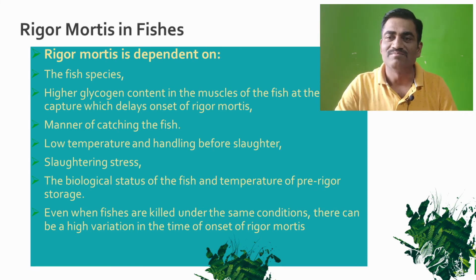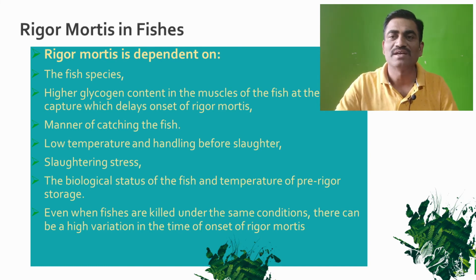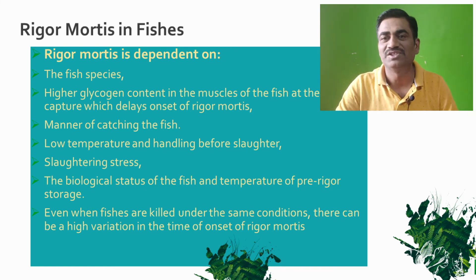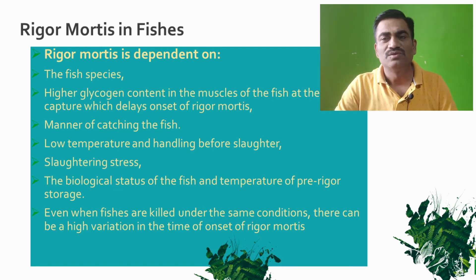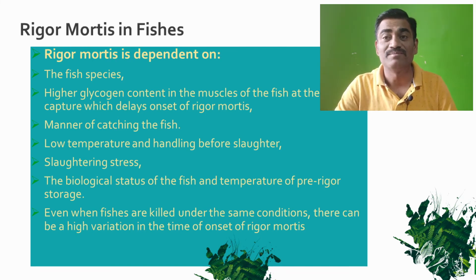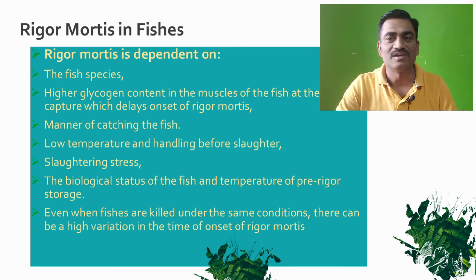In aquaculture, prawns are harvested by nets and suddenly kept in chilled water, so the fish can die suddenly without energy loss. This is the main importance. The rigor mortis also depends upon the temperature at which we keep the fish — the lower the temperature, the higher the time frame for onset and prolongation of rigor mortis.